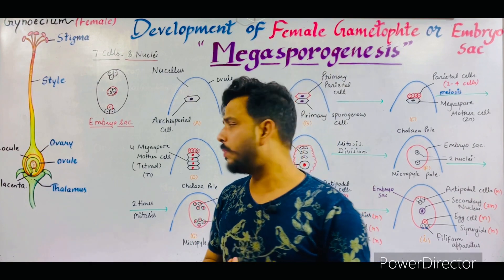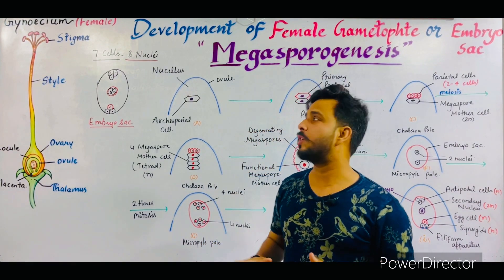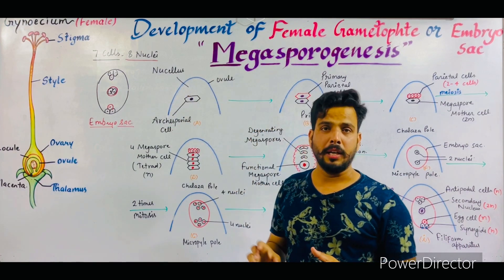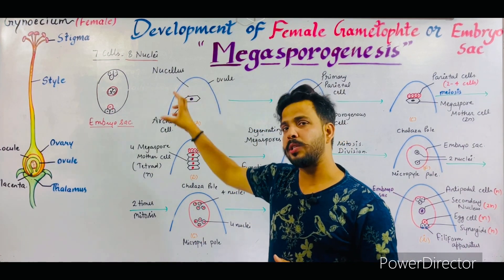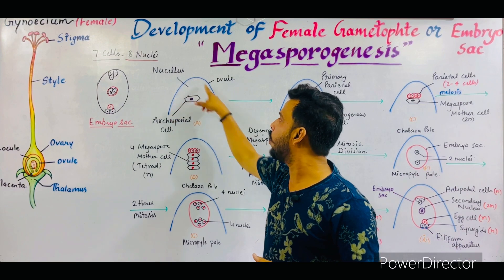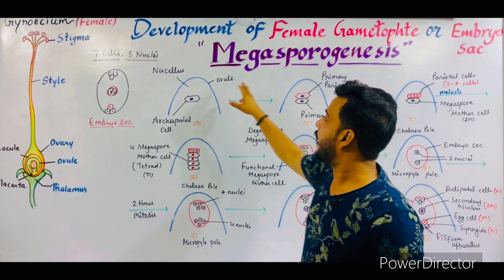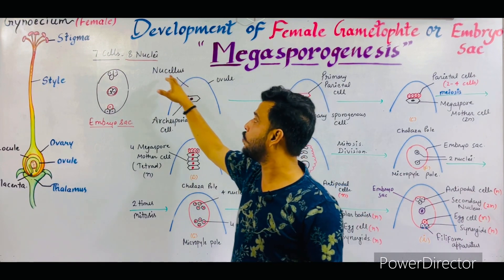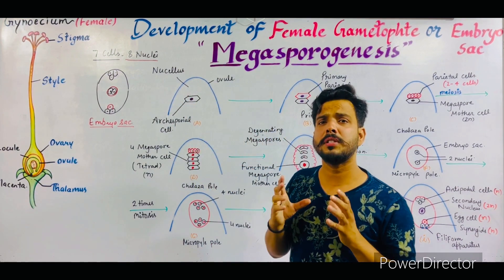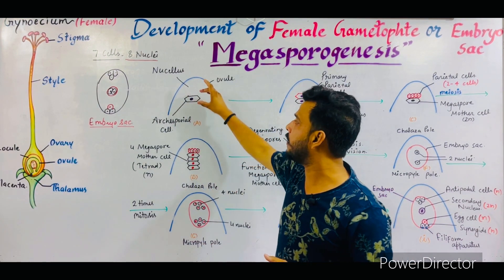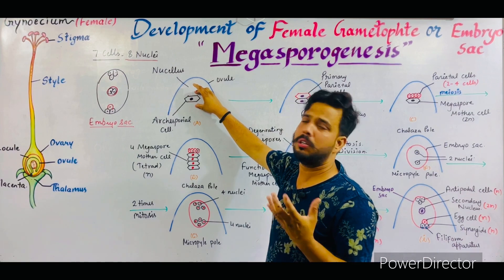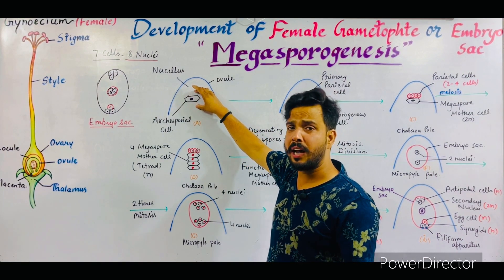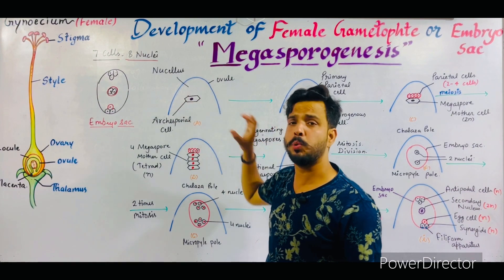With the help of this diagram I will explain megasporogenesis in detail. As we know, most of the part of the ovule is known as nucellus. Inside the ovule, the embryo sac will develop. A single cell of the nucellus becomes enlarged in size and is converted into the archesporial cell.